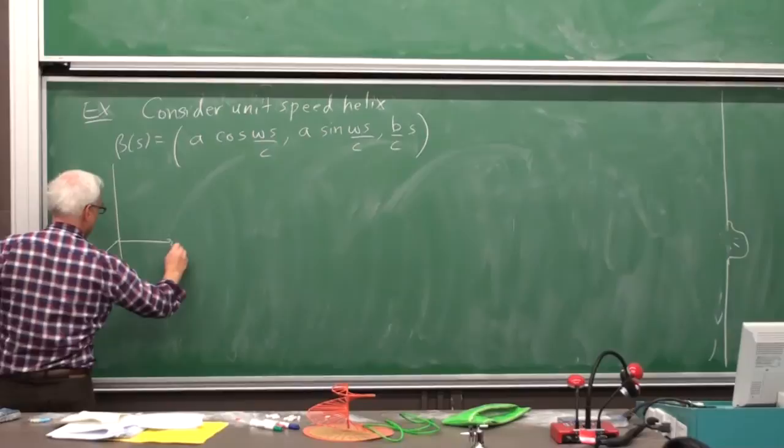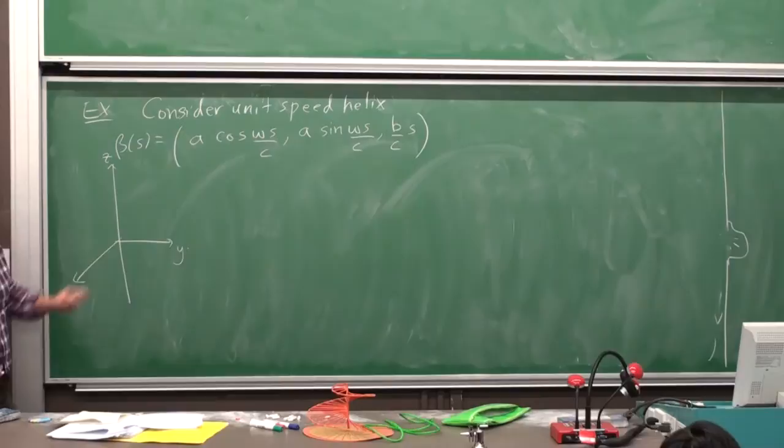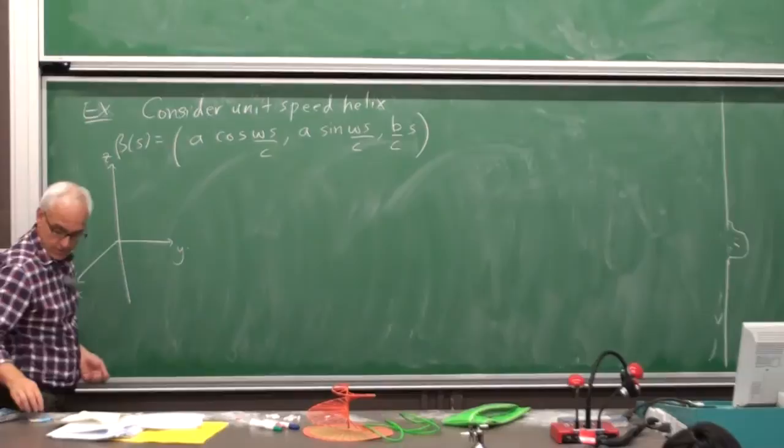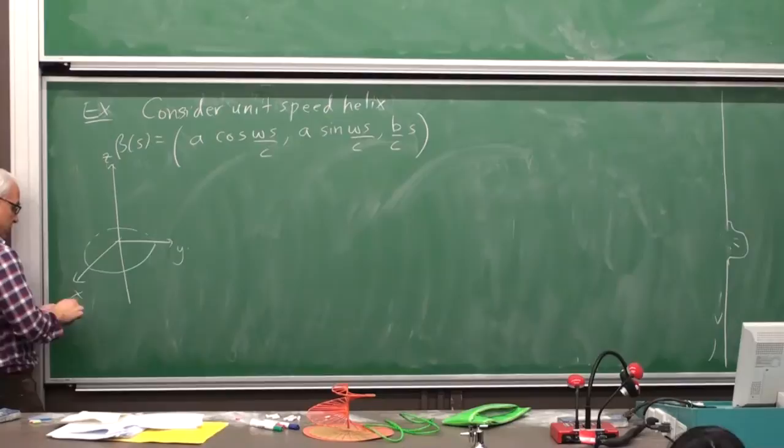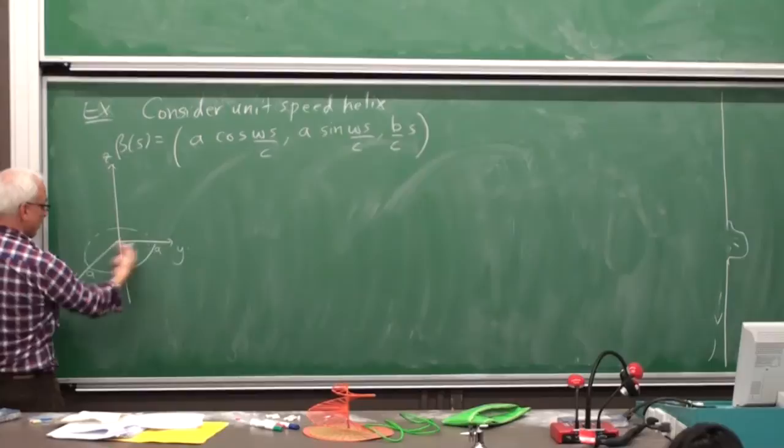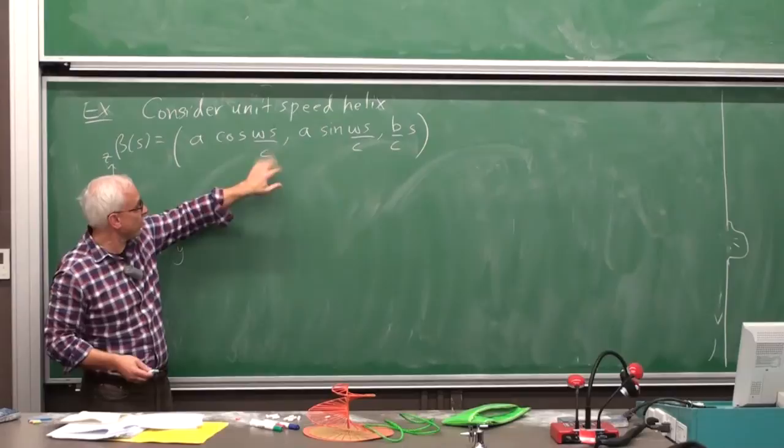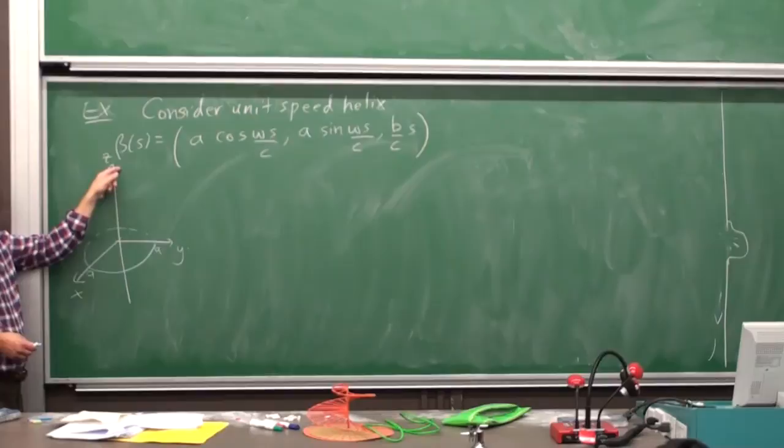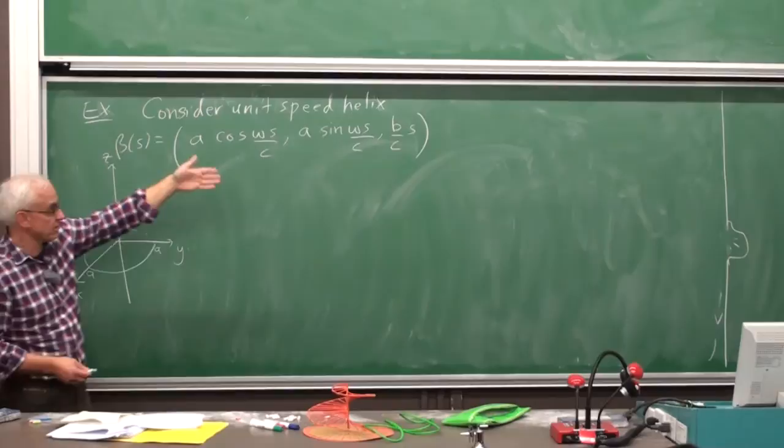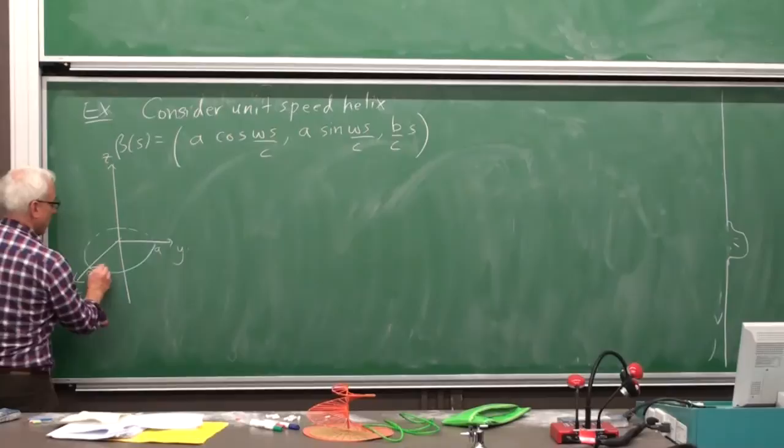So what this is, is a curve that in its XY components is going around a circle of radius A. So here's a circle of radius A in the XY plane, and that's what the X and Y coordinates are doing, with respect to some frequency that depends on this W and C constants. And then in the Z direction, we're moving linearly with S. So the Z coordinate is just increasing linearly, some constants B on C.